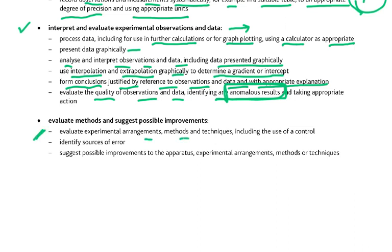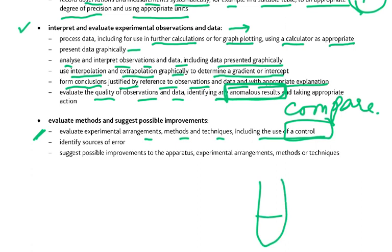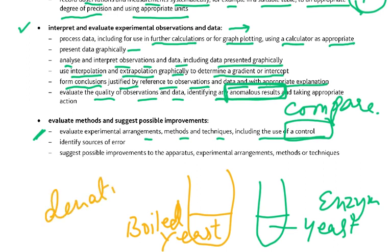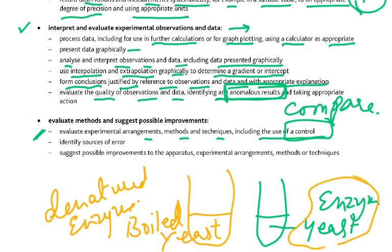What is a control? A control is for comparison. For instance, if you are studying yeast — yeast contains enzymes — in a similar parallel experiment you would use boiled yeast. This boiled yeast is the control, because when you boil the yeast you have denatured the enzymes, so it is not going to work. But if the same reaction still occurs with boiled yeast, that means it wasn't the enzymes in the yeast causing the reaction — it was something else. So that is the use of a control.